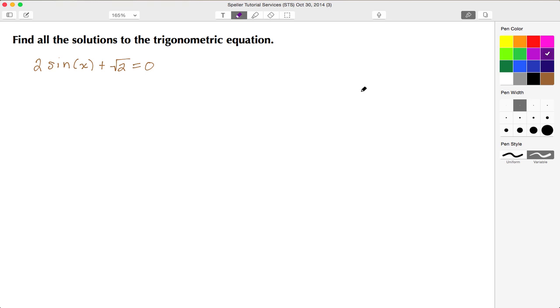Welcome back to STS. In today's video, we're going to find all the solutions of this trig equation. We have 2 times sin(x) plus root 2 is equal to 0.